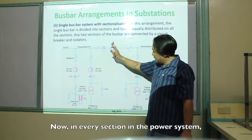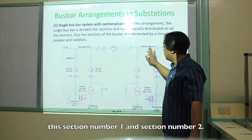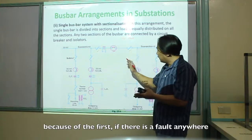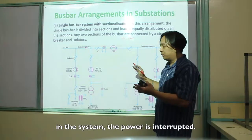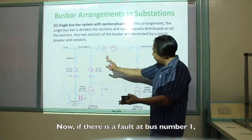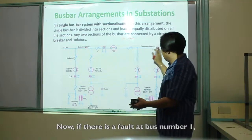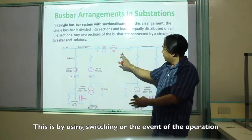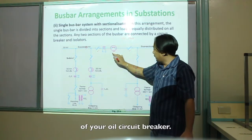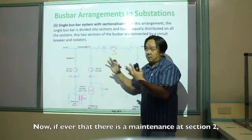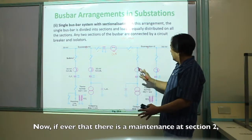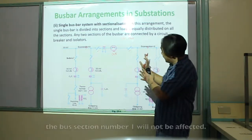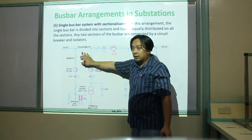In every section of the power system — section one and section two — this is compensated from the first arrangement. On the first type, if there is a fault anywhere, the power is interrupted. Now, if there is a fault at bus section number one, bus section number two will not be affected. Similarly, if there is maintenance at section number two, bus section number one will not be affected.